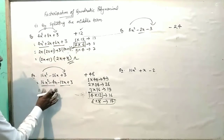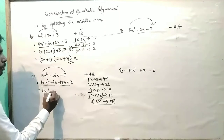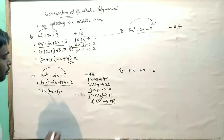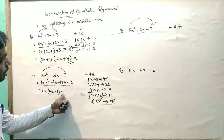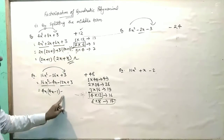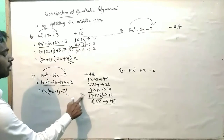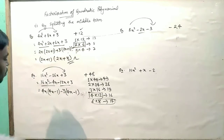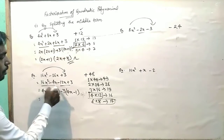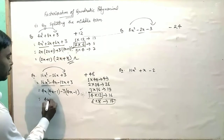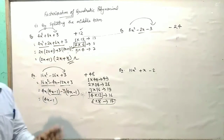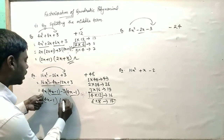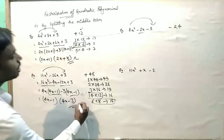Now we form pairs and take common. From 16x² - 4x, common is 4x, giving 4x(4x - 1). From -12x + 3, common is -3, giving -3(4x - 1). So we get (4x - 1)(4x - 3). That is our answer.